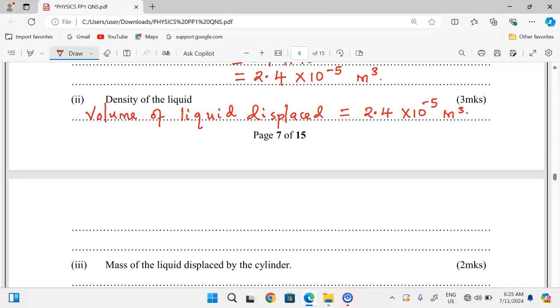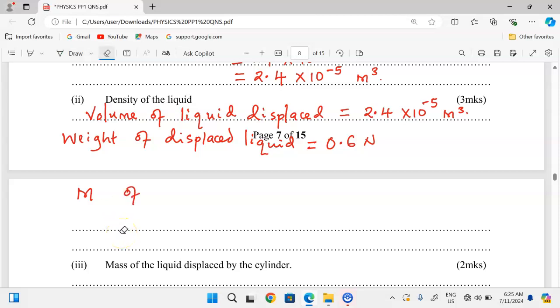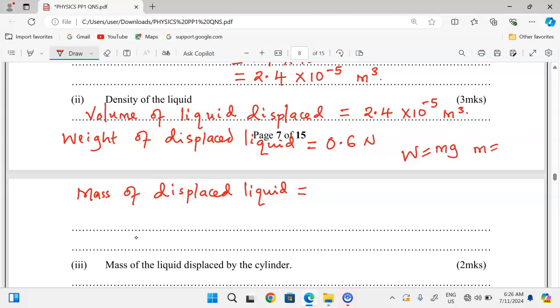So for this liquid we got volume displaced and also weight which is corresponding to the displaced volume. Therefore we say weight of displaced liquid is going to be the upthrust experienced, 0.6 newtons. And so we can get the mass, knowing that mass of displaced liquid is equivalent to, you know we say that weight is equal to mass times gravity. This is to mean that mass is given by weight out of gravity.